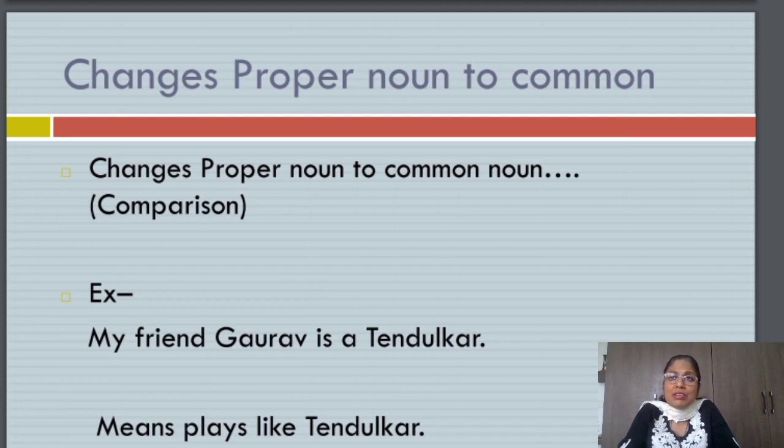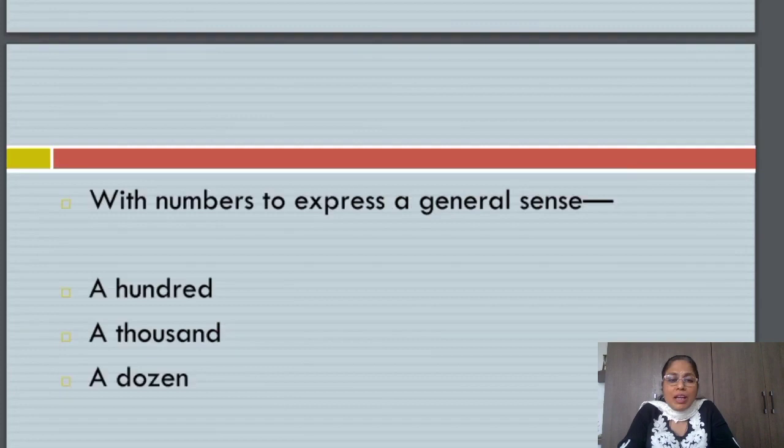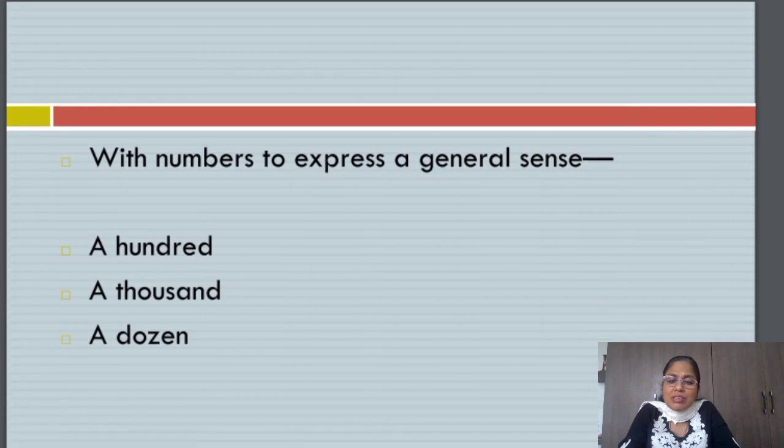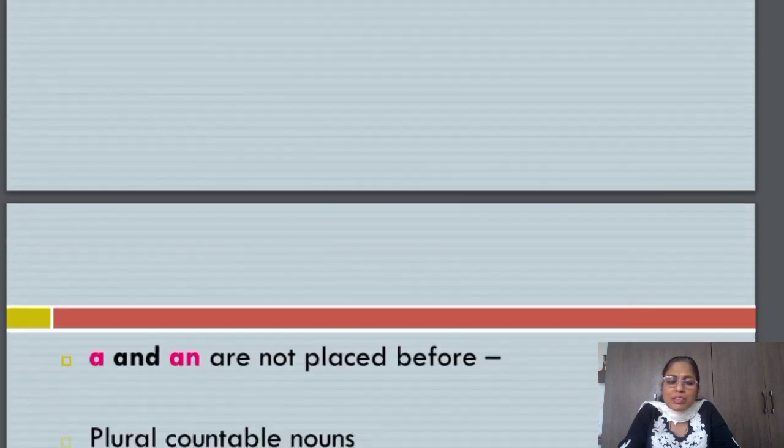Otherwise, I don't use the article A or AN before a proper noun. I can make use of this article before numbers to express a general sense. I can say a hundred, a hundred rupees means any hundred rupees. A thousand, a dozen. A dozen bananas are kept in the basket.